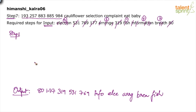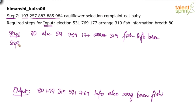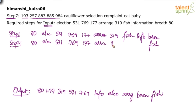In step one, bring 80 to the first position — 80 was at the last position — and copy everything else as it is: election, 531, 769, 177, arrange, 319, fish, info, bread. In step two, fix the last word: fish should be in the last position, so bring fish there and copy everything else as it is: election, 531, 769, 177, arrange, 319, info, bread.